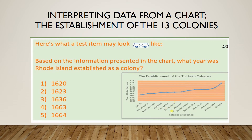Let's try that again. Now that we have identified Rhode Island on the chart, the next thing we want to do is determine when Rhode Island was established. When we draw a line from Rhode Island to where the dot is located, and then draw a horizontal line going across, we see that Rhode Island was established around 1640 according to the chart.